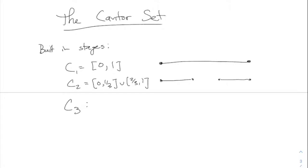In each subsequent stage you remove the middle thirds of everything you've got. C_3 keeps those two intervals and splits each, and C_4 is about as small as I can draw. And so on. What you get in the limit of this process is the Cantor set.